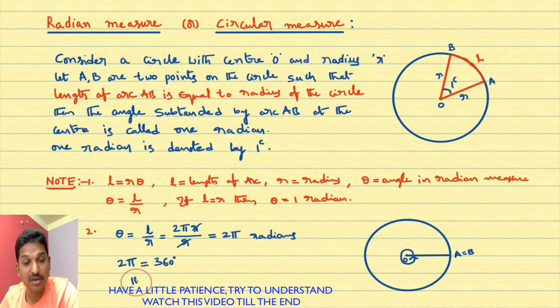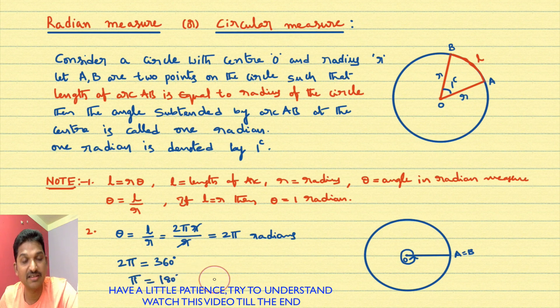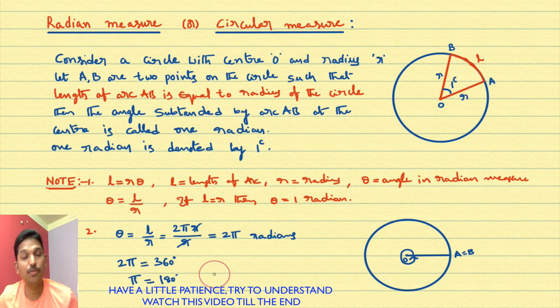From 2 pi radians equal to 360 degrees, we get pi radians equal to 180 degrees. These are the important points in radian measure.